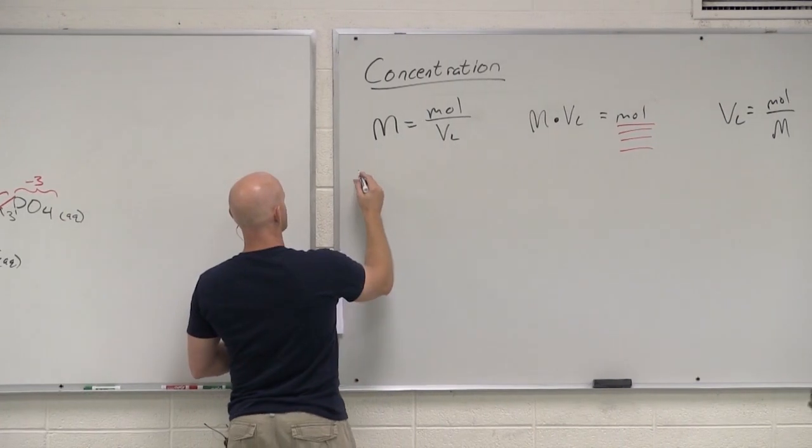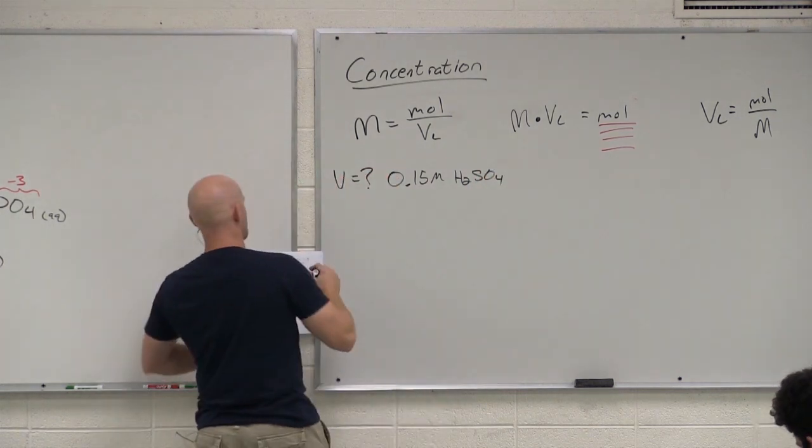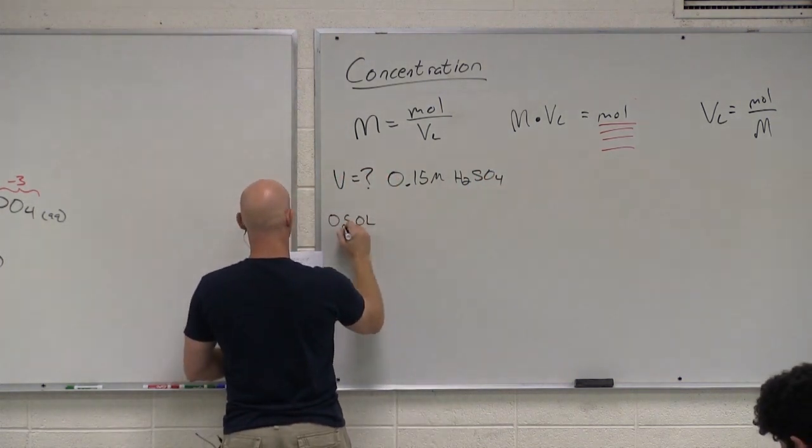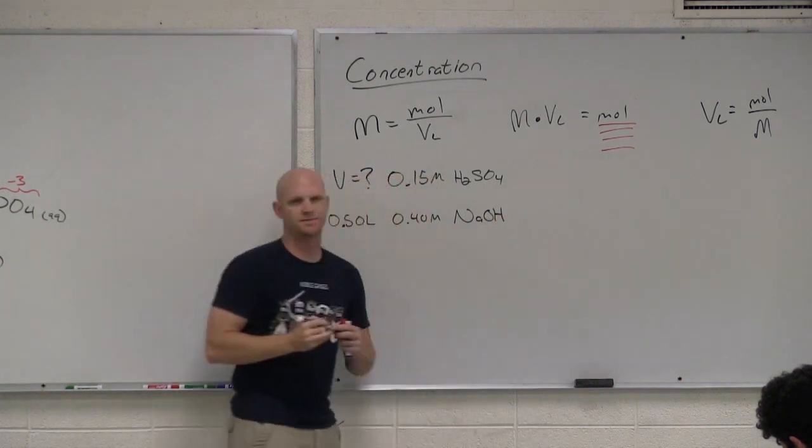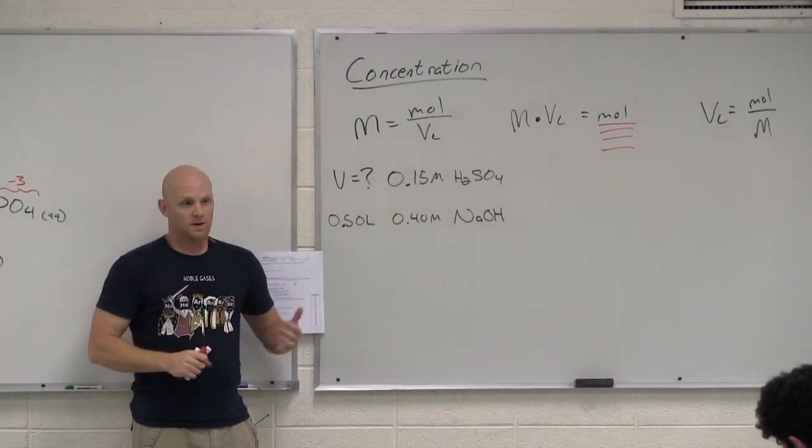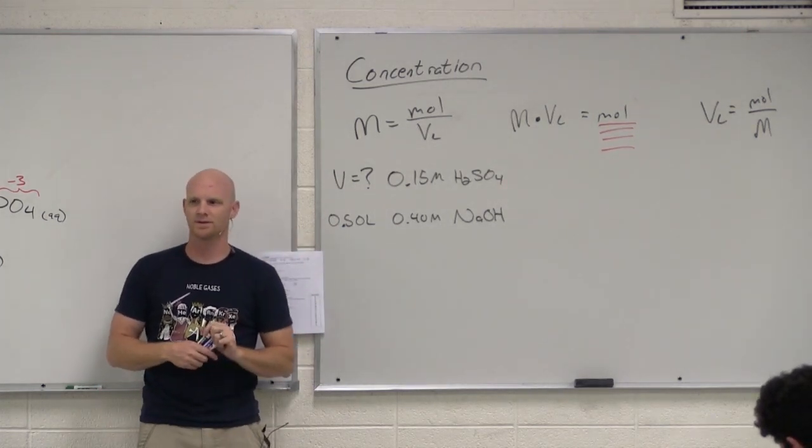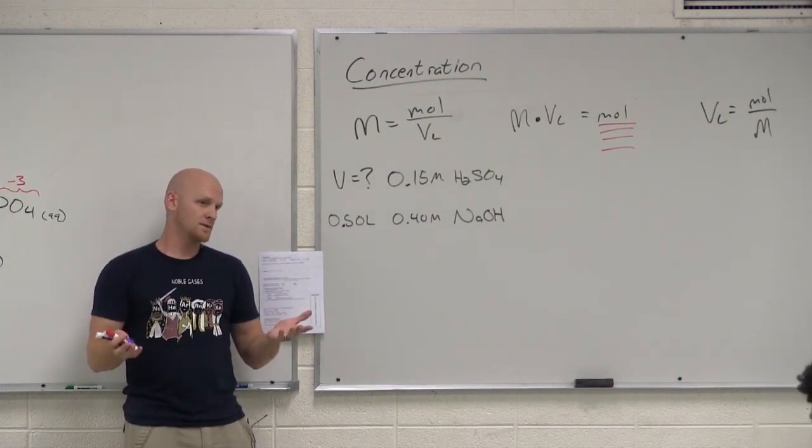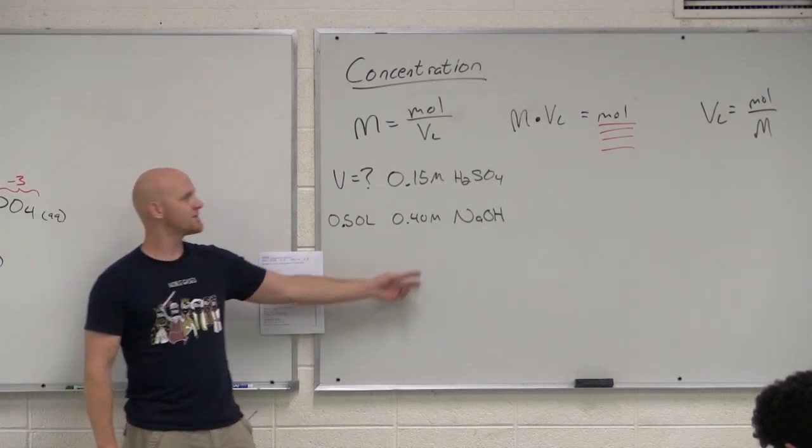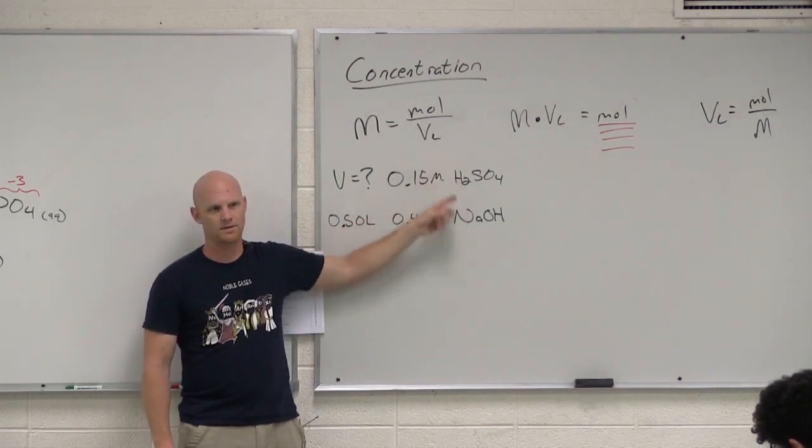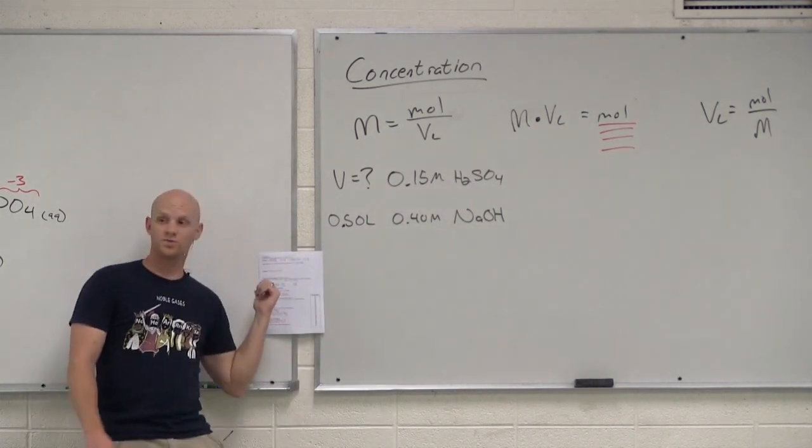Question on your handout is what volume of 0.15 molar H2SO4 is required to neutralize 0.50 liters of 0.40 molar NaOH. So first of all, this implies a chemical reaction is going on. It uses the word neutralize in the question. What kind of chemical reaction are we doing?